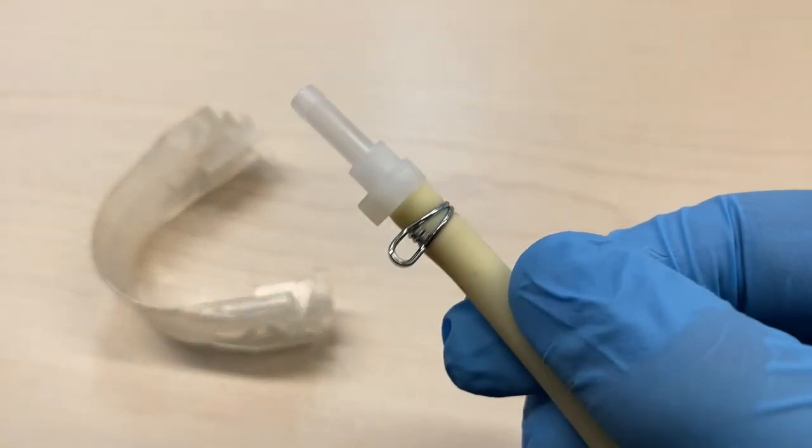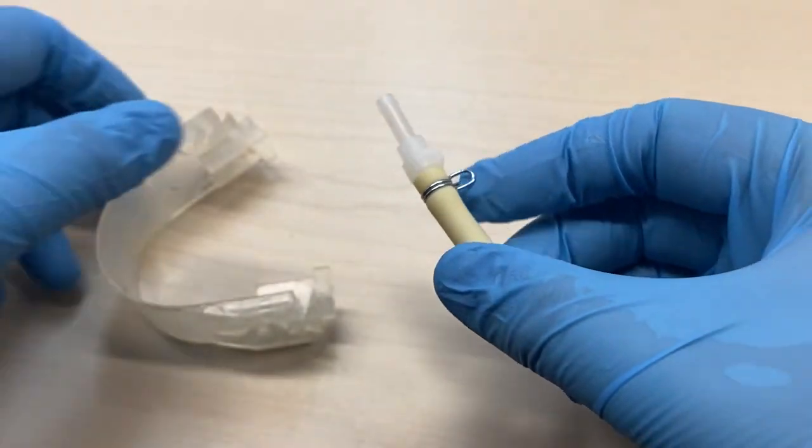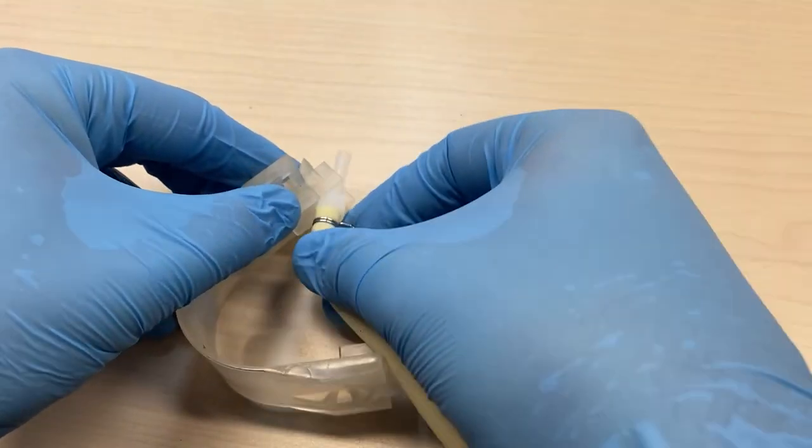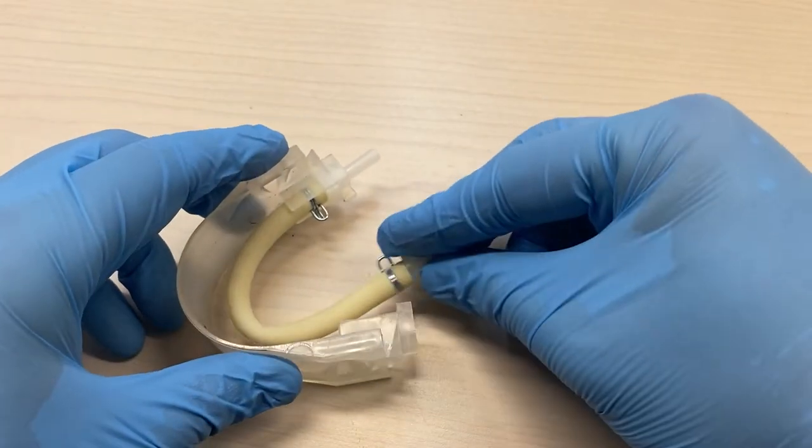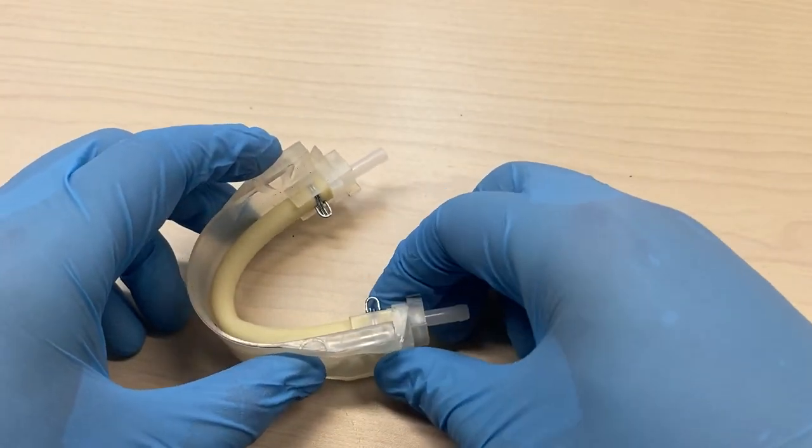Next, when reattaching the plastic cover, be aware the ends of the condensate pump tube are specifically designed to fit in the grooves of the plastic covering.